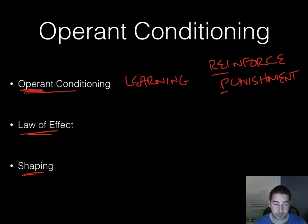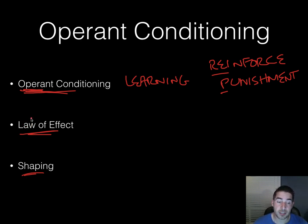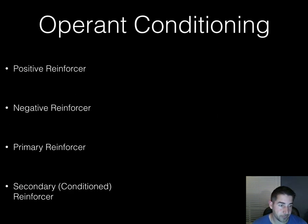A key difference between operant conditioning and classical conditioning is that classical conditioning focuses on whether one stimulus predicts another as a cause of a response. Operant conditioning is when organisms associate their actions with the consequence. The key here is consequences.